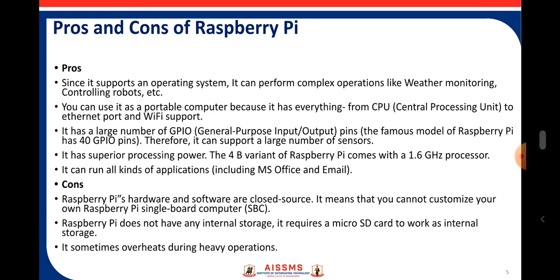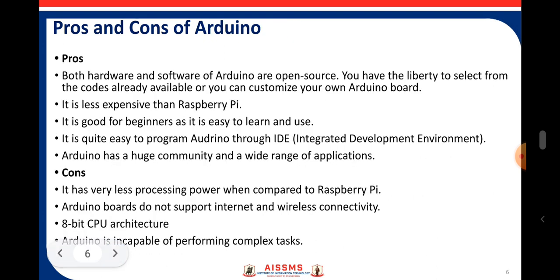The cons of Raspberry Pi: the hardware and software are closed source, unlike Arduino which is open source. This means you cannot customize your own Raspberry Pi single board computer. Raspberry Pi does not have any internal storage — it requires a micro SD card to work as internal storage. It also sometimes overheats during heavy operations.